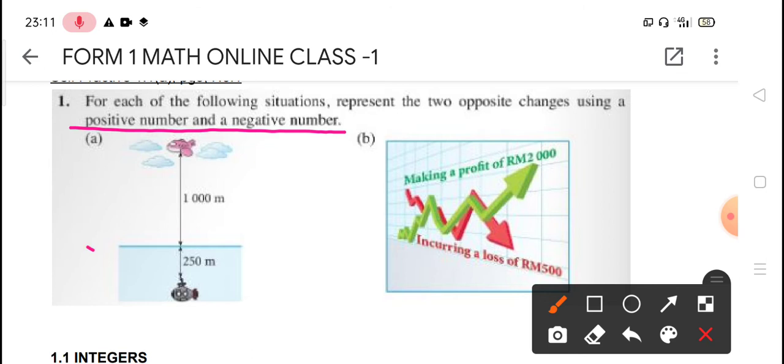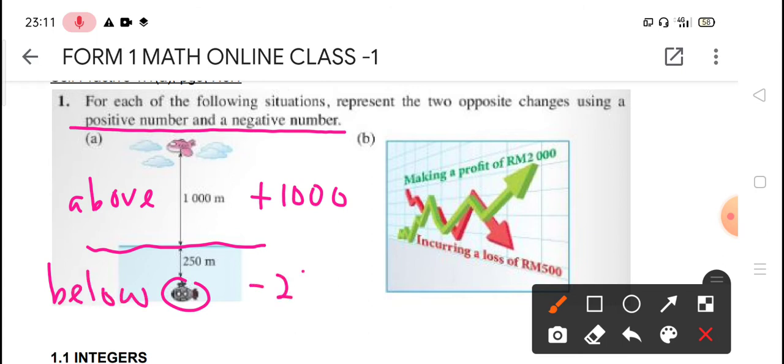So now we check this question. Question A. This is the sea level. So the aeroplane is above the sea level, positive 1000. However, the submarine is below the sea level. So below means negative 250. So we had used the positive and negative number to represent the given situation.